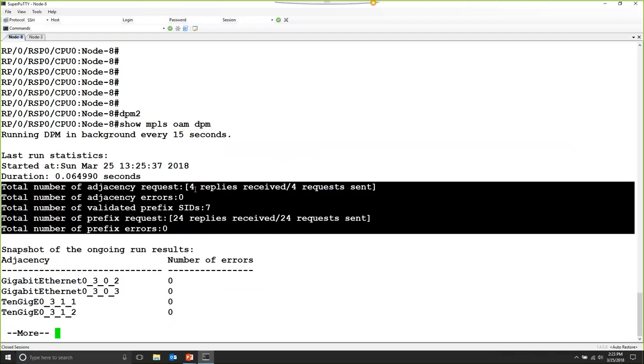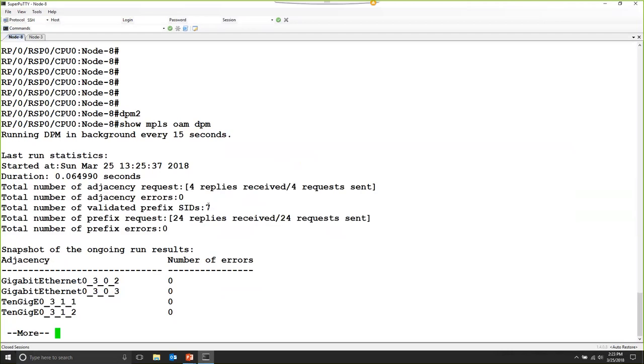There were four adjacency seed tests with no errors. There were also seven prefix seeds that were validated with no errors as well and conducted over 24 test iterations.